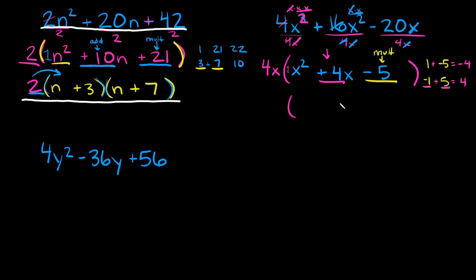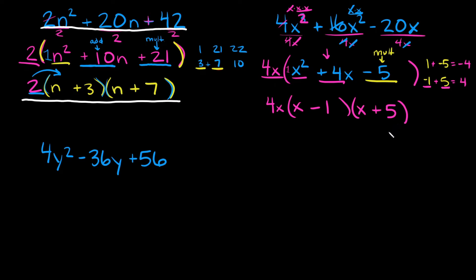So let's write our parentheses. We have x squared, so we'll have an x here and an x here, then negative 1 and positive 5. And lastly, don't forget the 4x we factored out at the very beginning — bring that straight down. So this would be your final answer: 4x times (x minus 1) times (x plus 5).